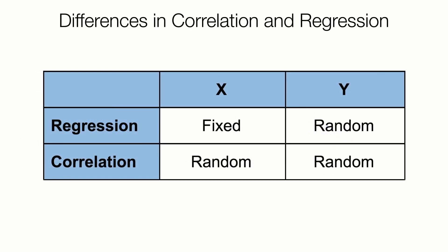And perhaps the most fundamental difference: regression assumes x is fixed with no error, such as dose amount, whereas with correlation, x and y are typically both random variables, such as height and weight, or blood pressure and heart rate.